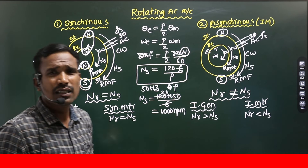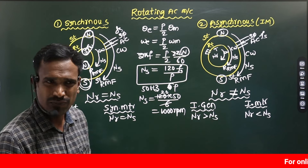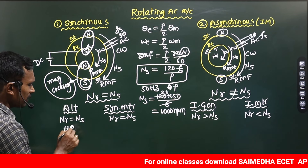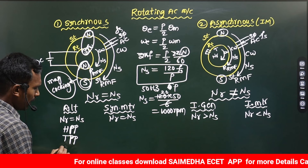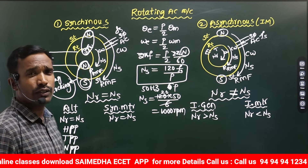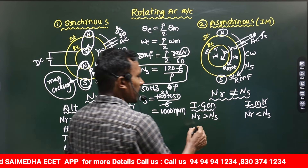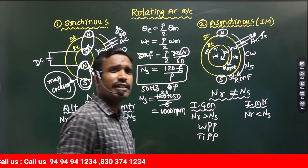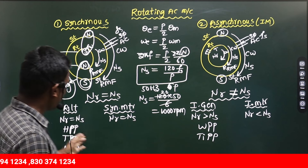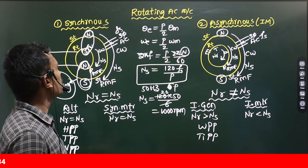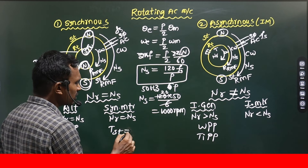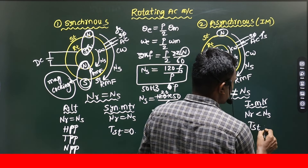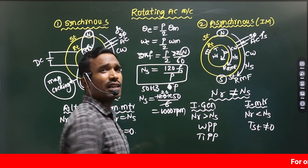These are the main differences between Synchronous and Asynchronous machines. Synchronous generators are used in hydroelectric power plants, thermal power plants, and nuclear power plants where speed is constant. The Synchronous motor has zero starting torque — these are not self-starting machines. The Induction motor, on the other hand, has non-zero starting torque and is self-starting.